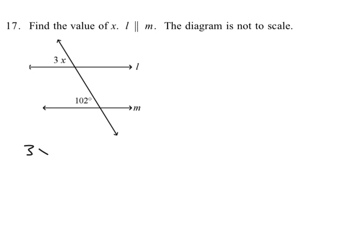...do is say that means 3x is equal to 102. And when we divide both sides by 3x—I'm sorry, we don't divide both sides by 3x, we divide both sides by 3. We get...